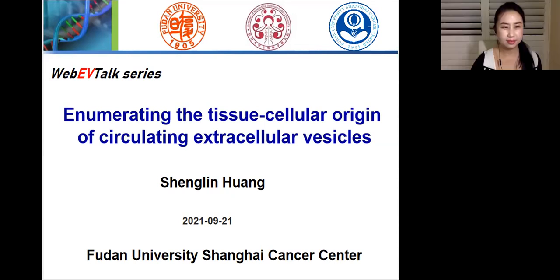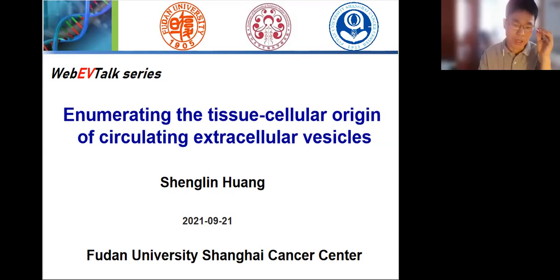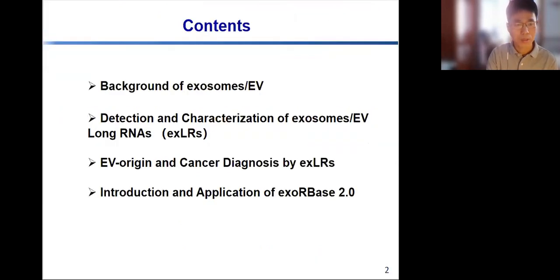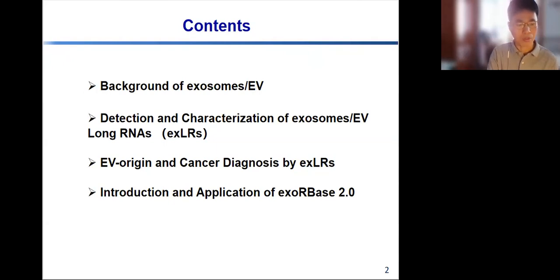I'm Shenglin Huang from Fudan University, Shanghai Cancer Center. Today I will talk about the enumerating of circulating EVs by EV long RNA. My talk has four parts. I will briefly introduce the background of exosomes and EV. Then, using our developed exLR-seq analysis, I will talk about the detection and characterization of EV long RNA, named as ESRIs. I will mainly talk about EV enumeration and cancer diagnosis by ESRIs. Finally, I will introduce our newly updated ESRIbase database and its application.